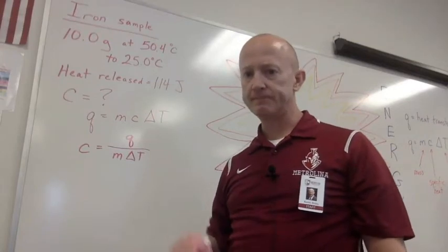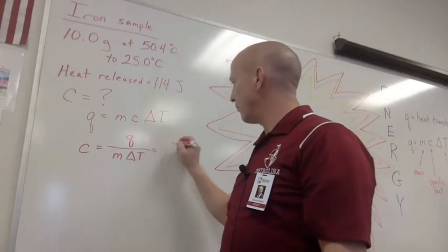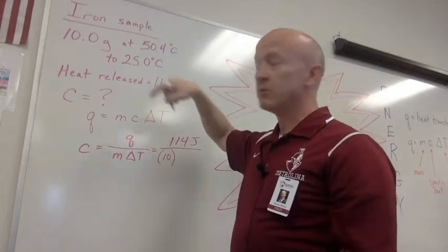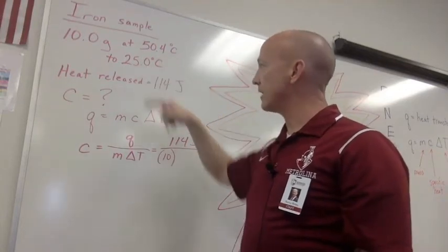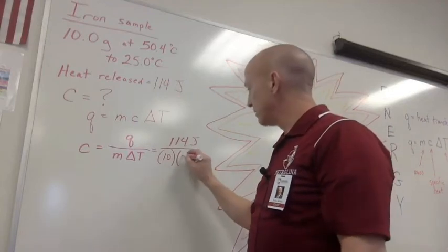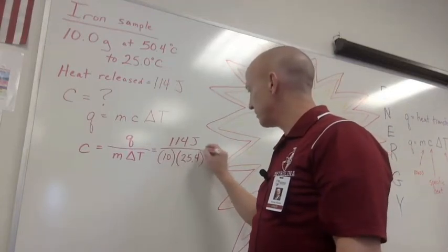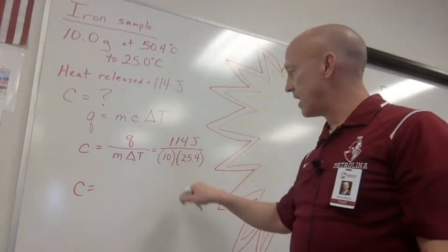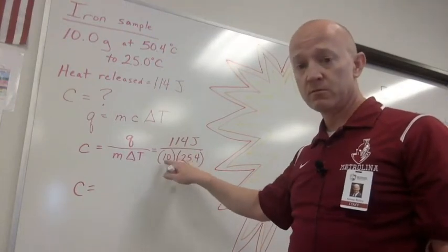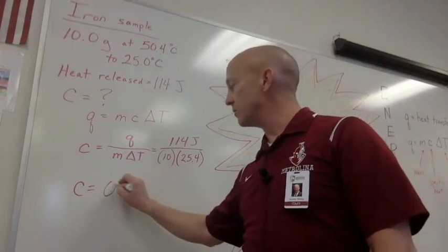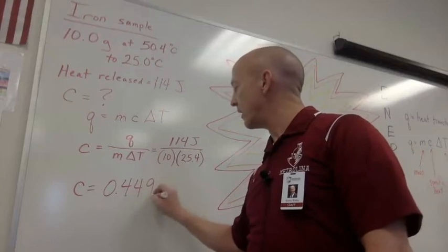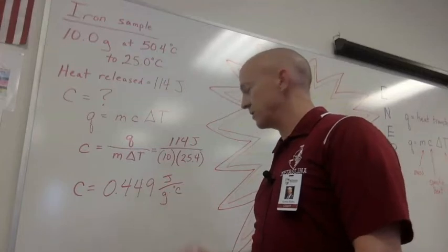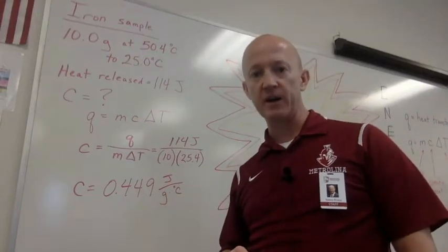Specific heat is equal to q divided by mass times change in temperature. All right, so now let's fill in. We have 114 joules divided by 10, again we said 50.4 minus 25, that gives us 25.4 degrees of temperature change. And now we just do the math. So c equals 114 joules divided by 254, and 114 divided by 254 is 0.449, and our units are joules per gram degree Celsius.